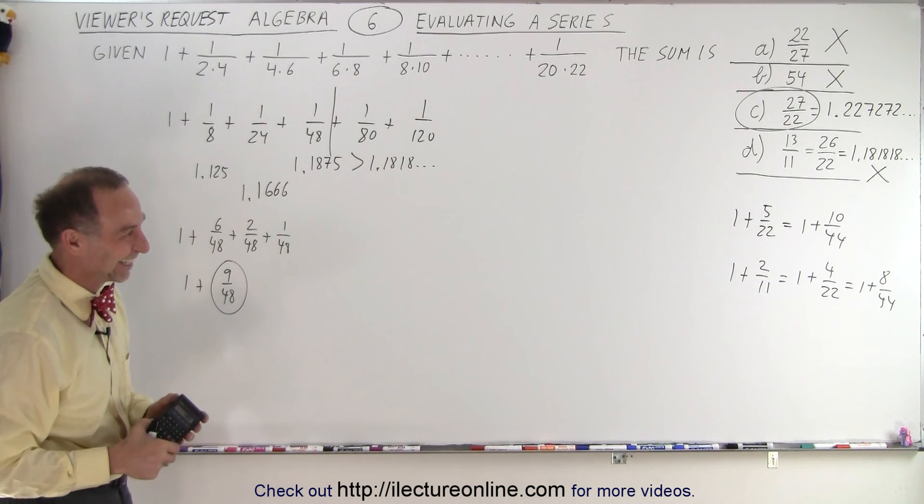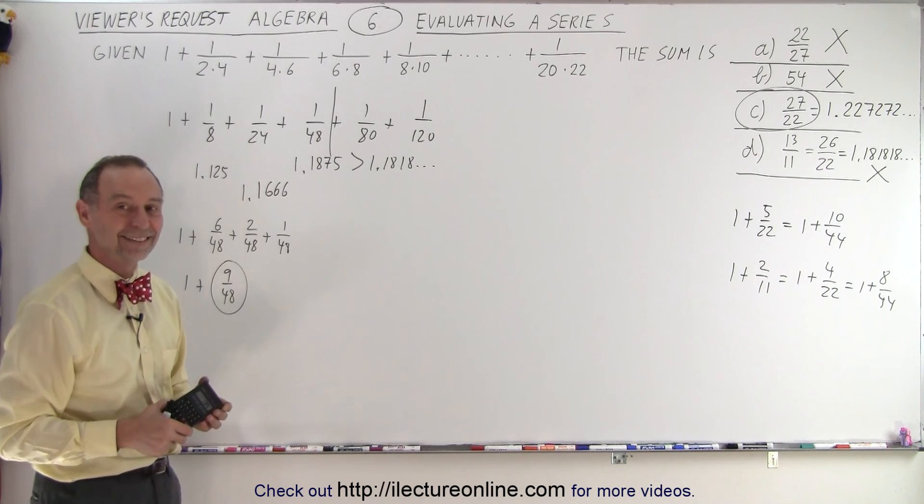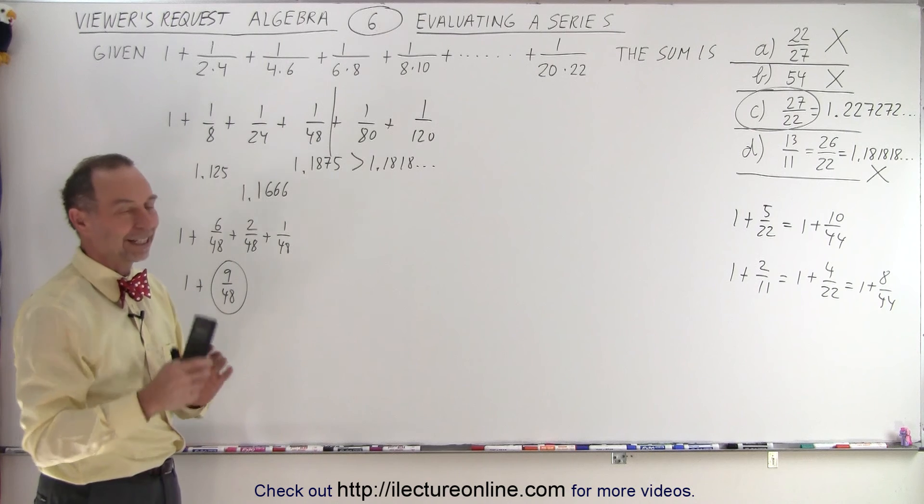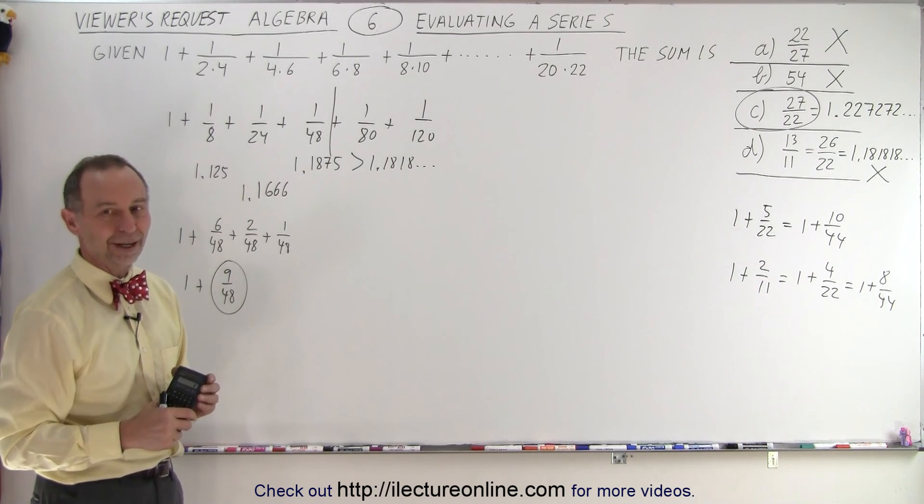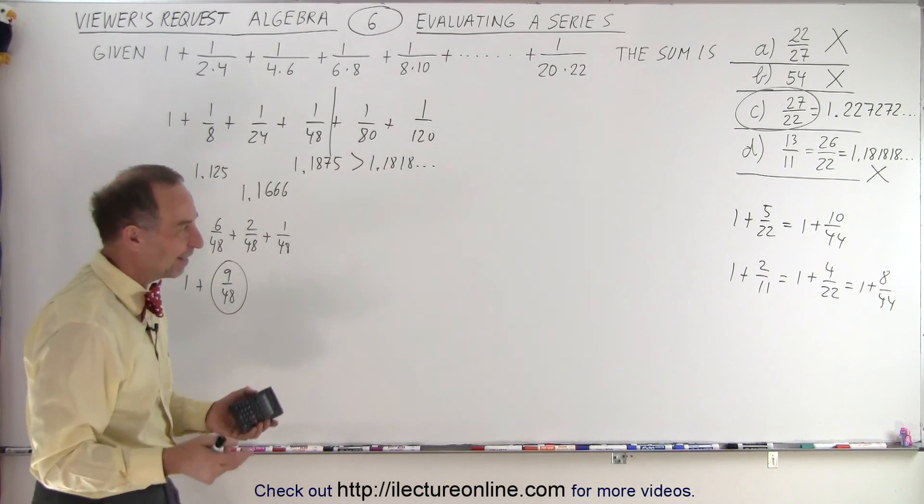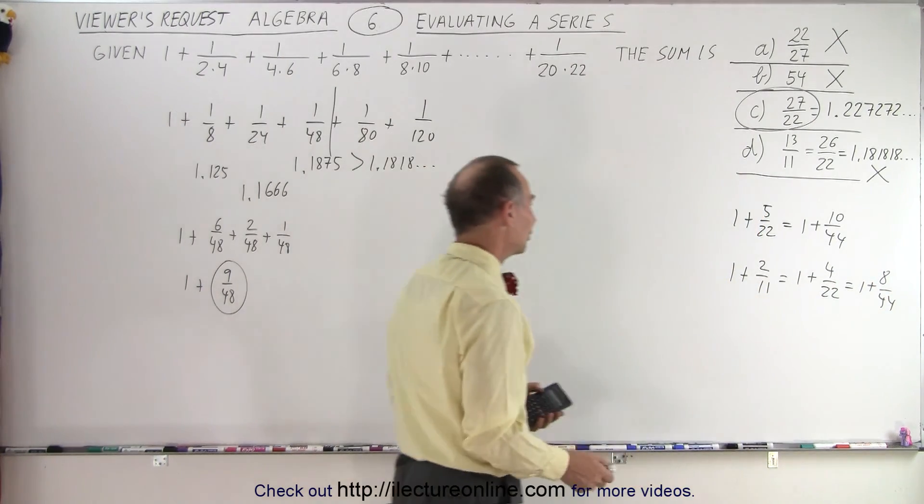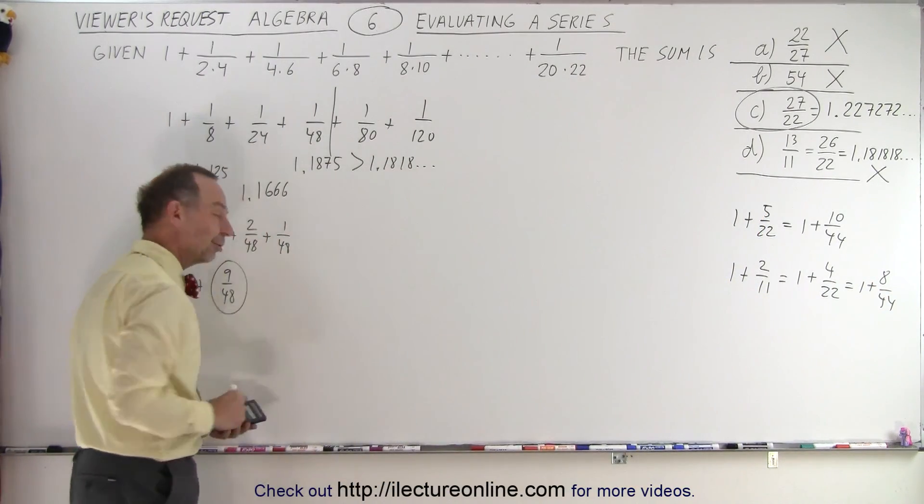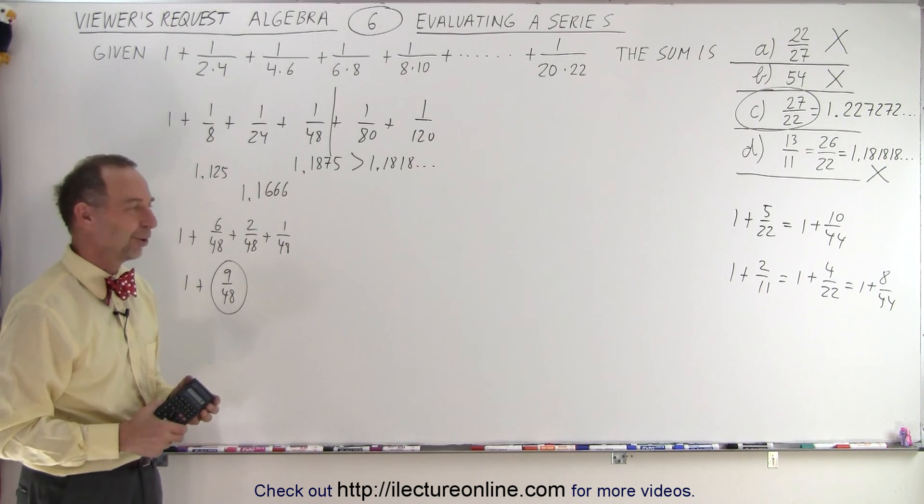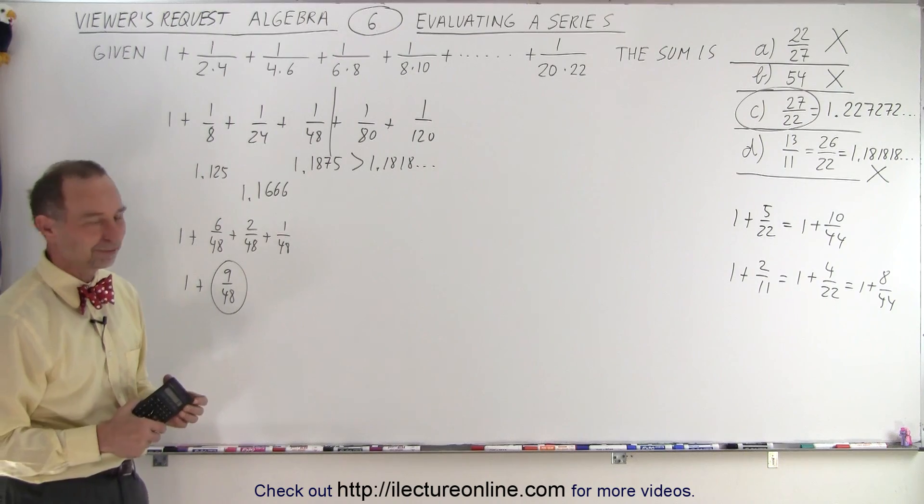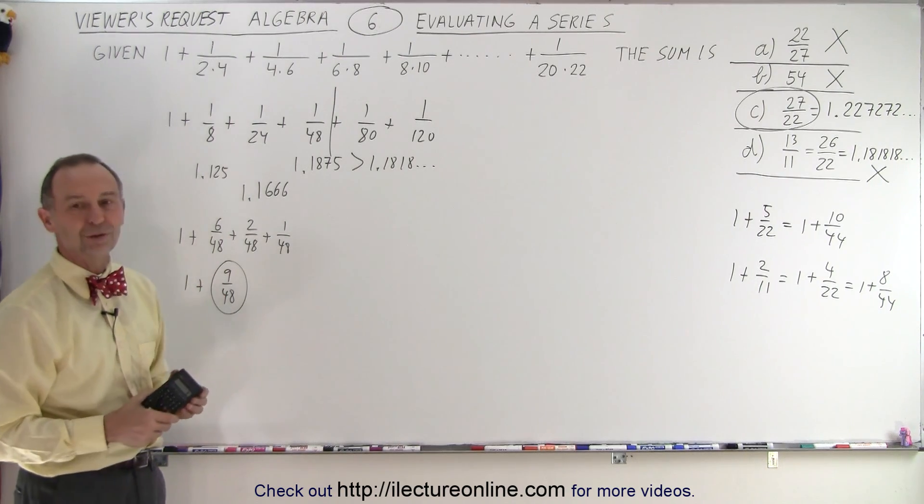Because if you only use a calculator, you don't even need to eliminate A and B. Yeah, you don't need, yeah, you don't need a calculator for elimination of A and B. That's correct. And again, if you turn this into a fraction, and you end up with 8 over 44, you know that 8 over 44 is smaller than 9 over 48. So, even without a calculator, you can fairly quickly get to the answer as well. Again, it's similar in approach.